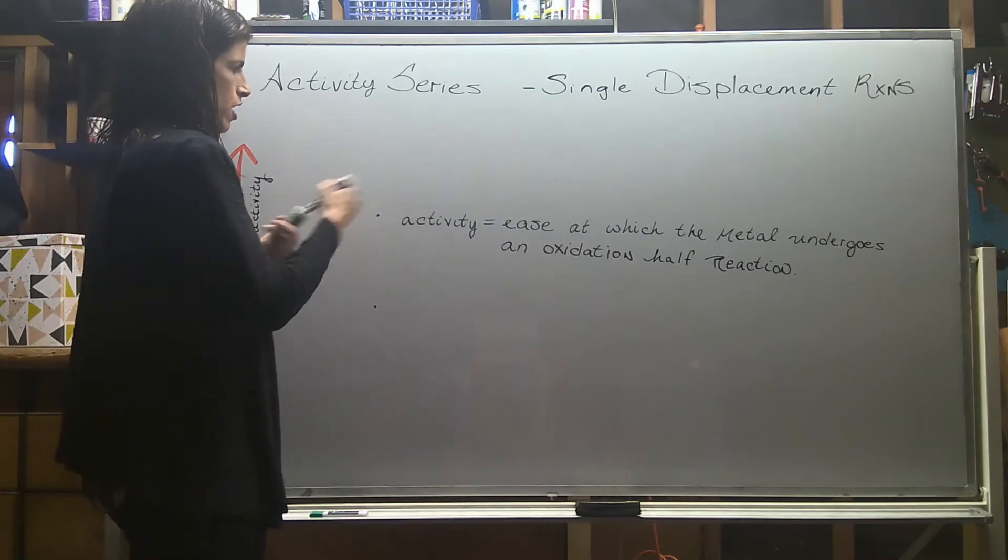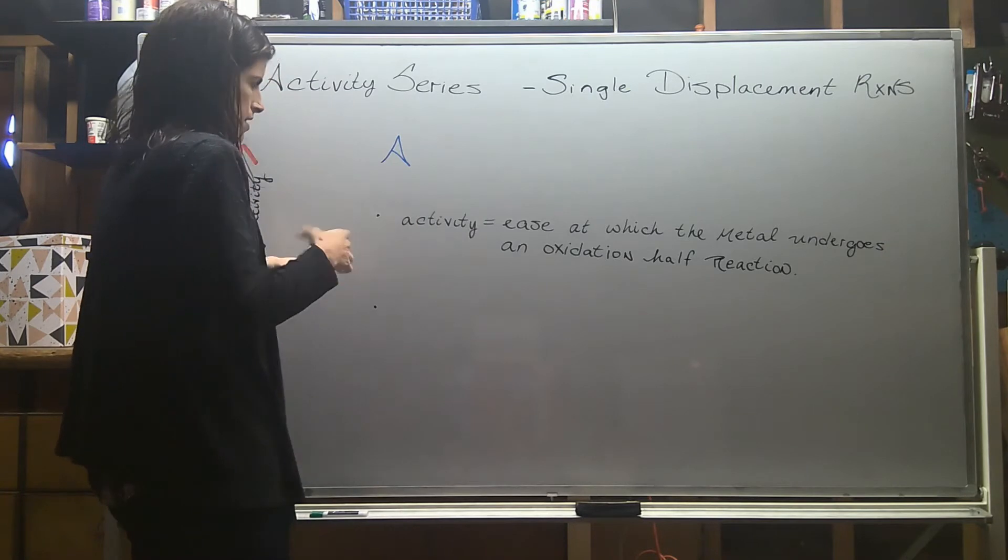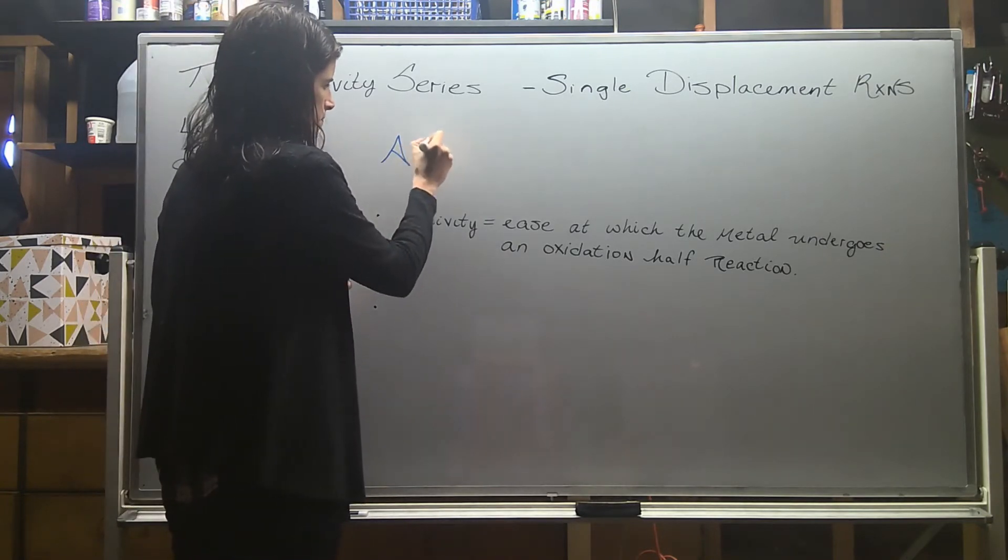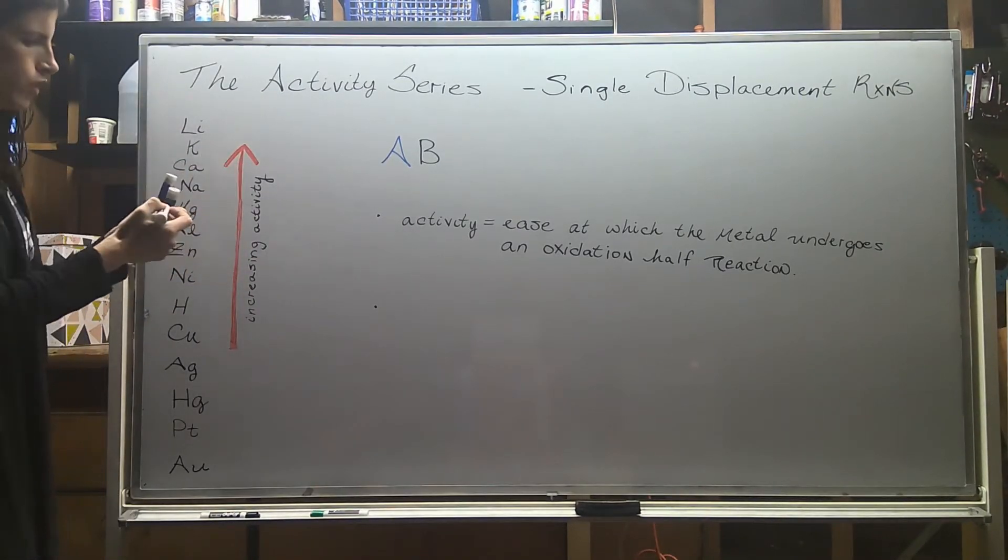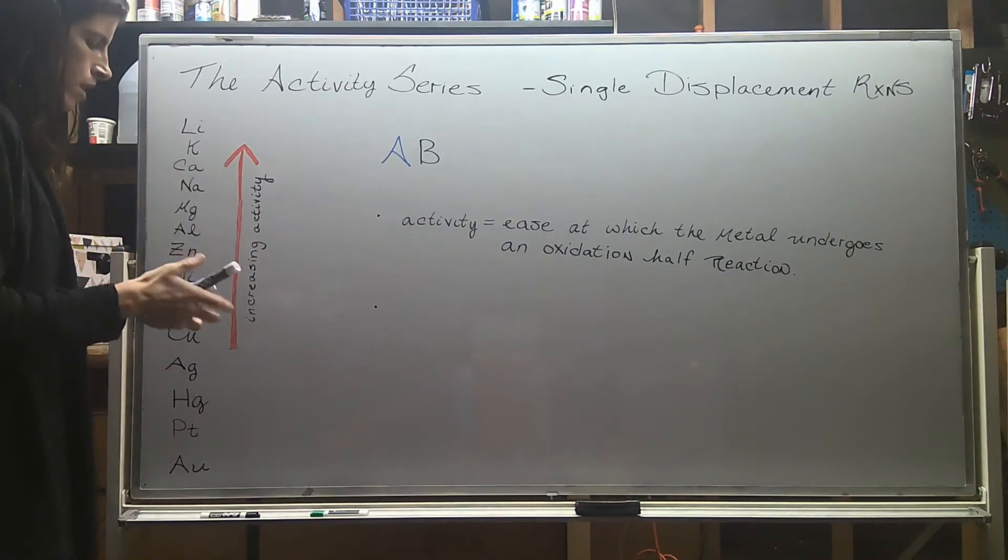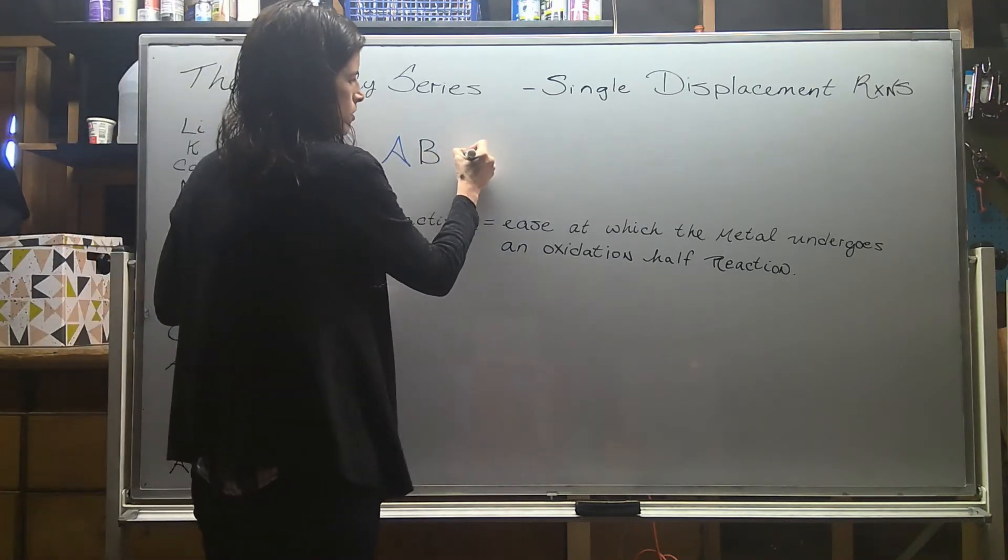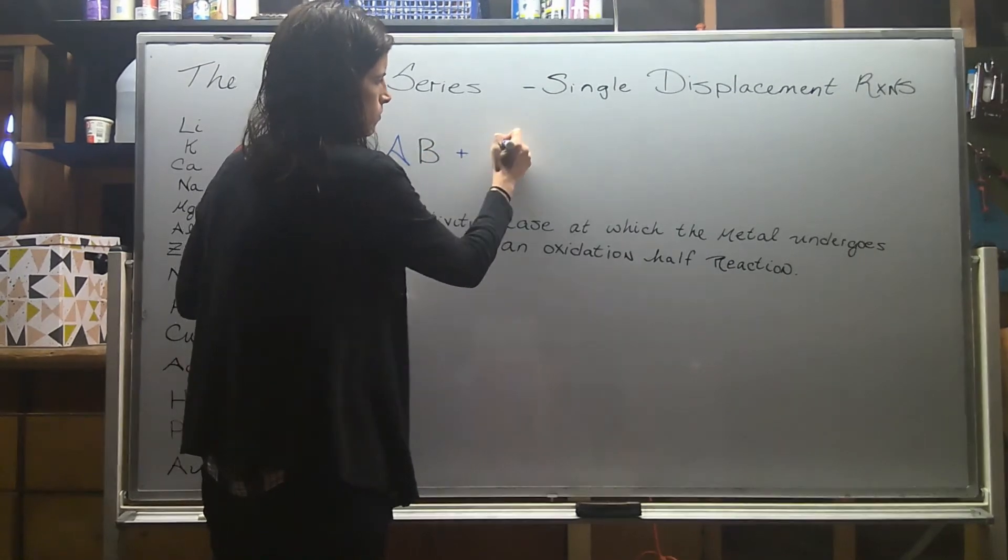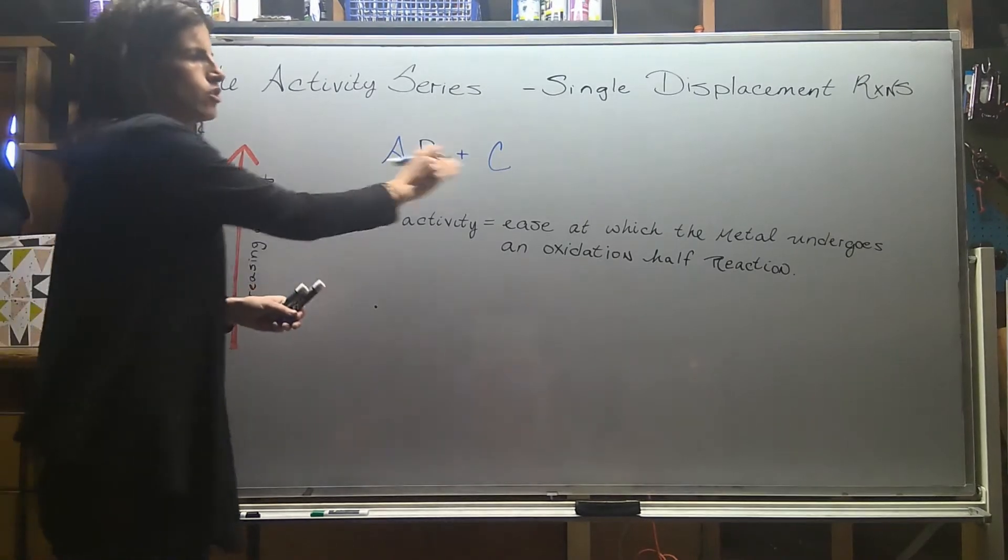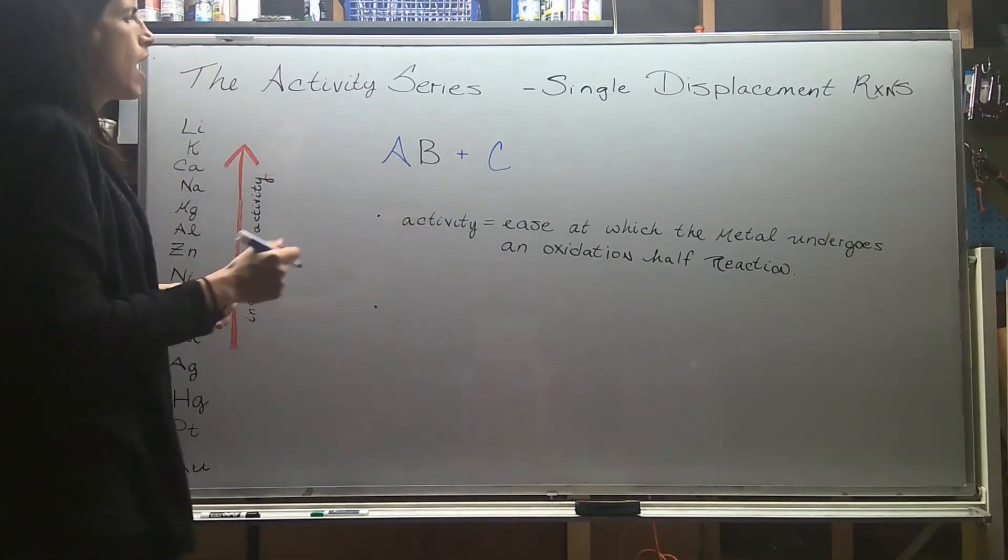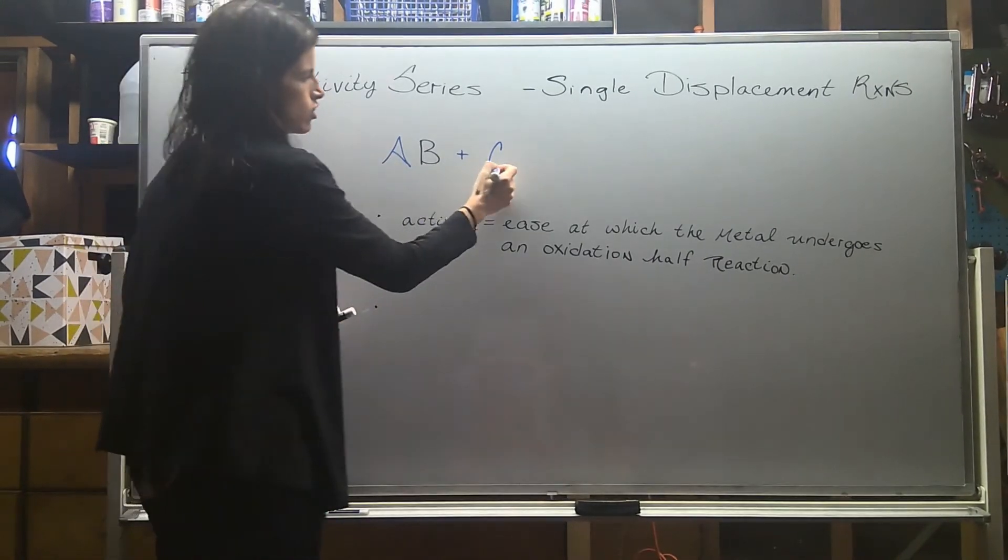So I'm just going to use some generic notation here. So I have A and B, and they're together. Maybe it's silver nitrate or something like that. Then you have another single element, I'll just represent it by letter C, but it doesn't mean anything. It's not carbon, just a generic element. And C is trying to kick A out of its relationship with B.